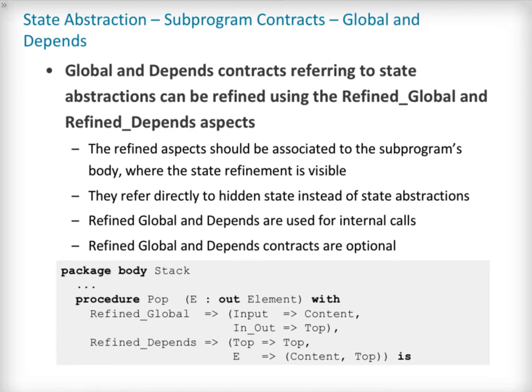If imprecise contracts dealing with state abstractions as a whole are perfectly reasonable for users of a package, global and depend contracts should remain as precise as possible inside the package's body itself. For this reason, SPARK introduces the notion of refined contracts — precise contracts specified on the bodies of subprograms where state refinements are visible. These contracts refer directly to the hidden state of the package. When a subprogram is called inside the package's body, these refined contracts are used instead of the general ones, so that the verification can be as precise as possible. Note that refined global and depend contracts are optional; if they are not specified by the user, the tool will compute them to check the package's implementation.